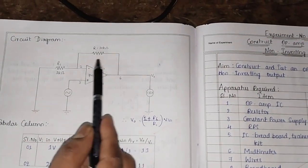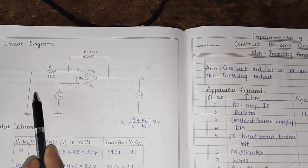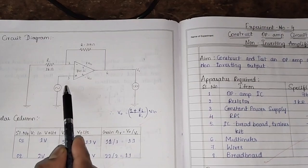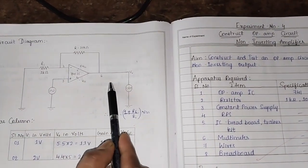Once we connect these resistors in this fashion, the circuit acts as a non-inverting amplifier. What is a non-inverting amplifier? Whenever we give input at pin number 3, we obtain amplified output at pin number 6.